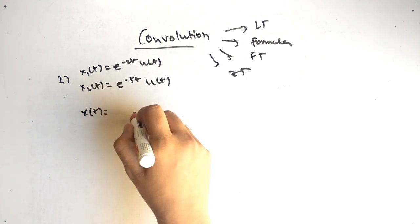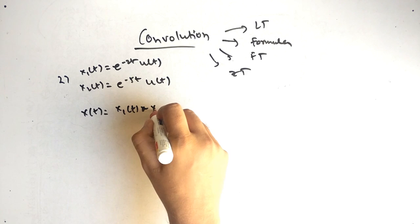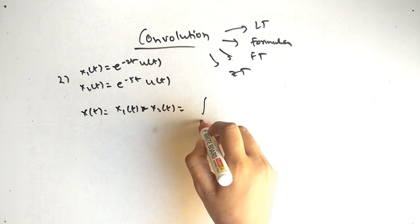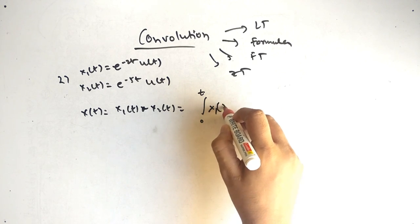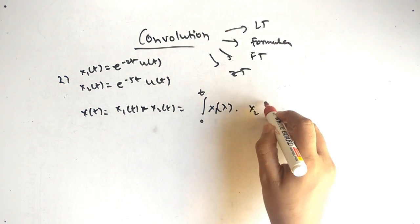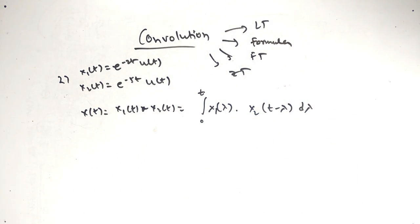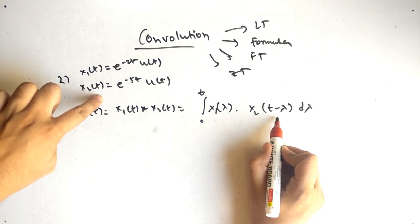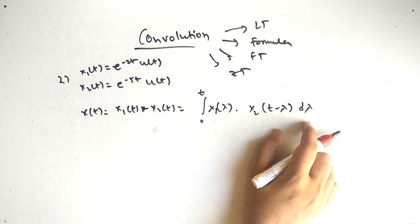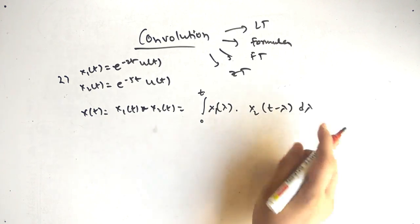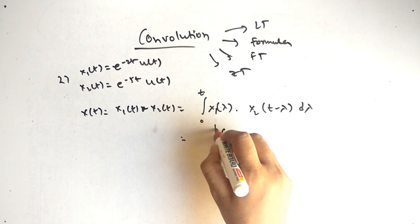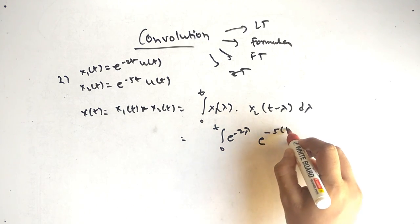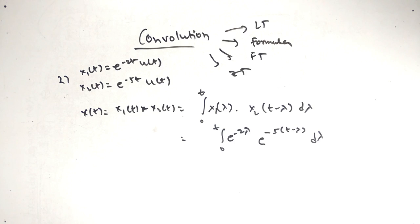The convolution formula to find x of t is the integral from 0 to t of x1 of lambda times x2 of t minus lambda d lambda. Basically, replace t by lambda in the first function and replace t by t minus lambda in the second function, then multiply and integrate with respect to lambda. So we get integral from 0 to t of e raised to minus 2 lambda times e raised to minus 5 times t minus lambda d lambda.